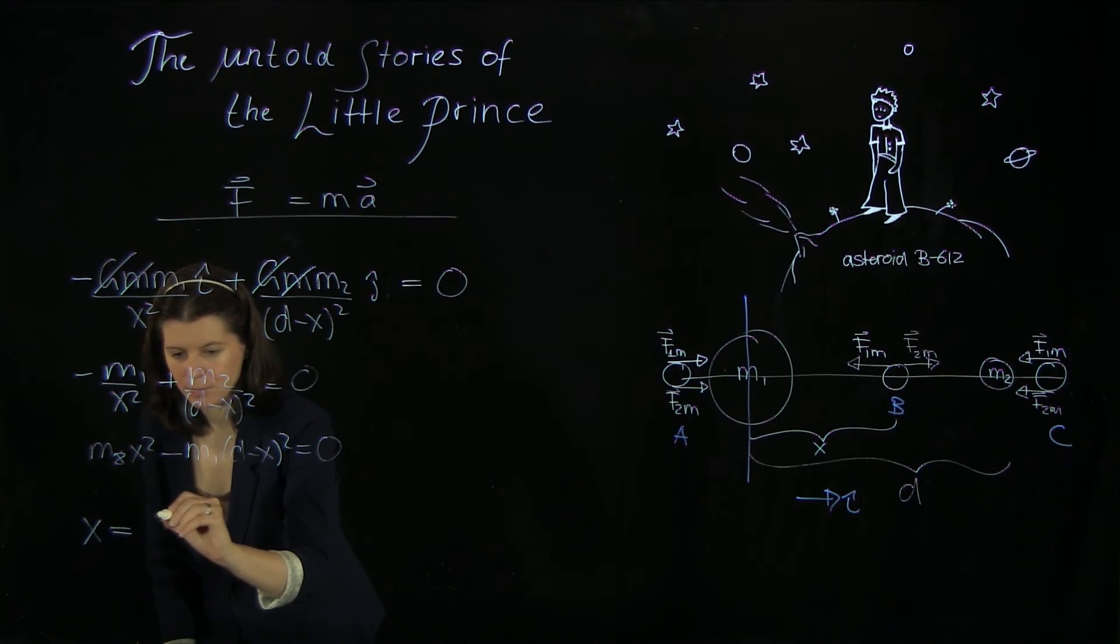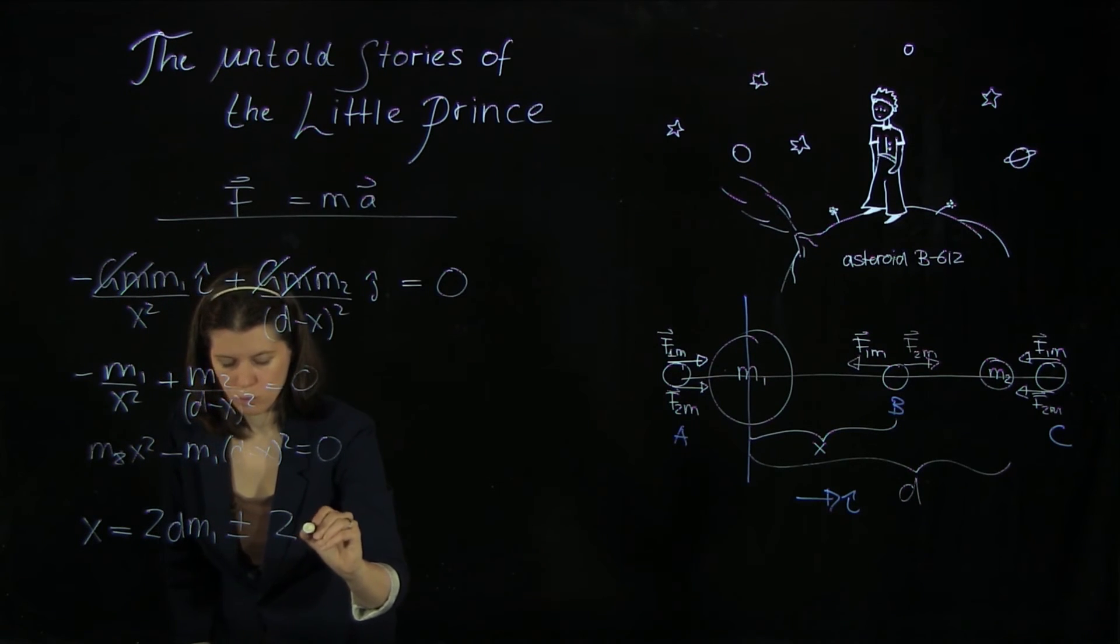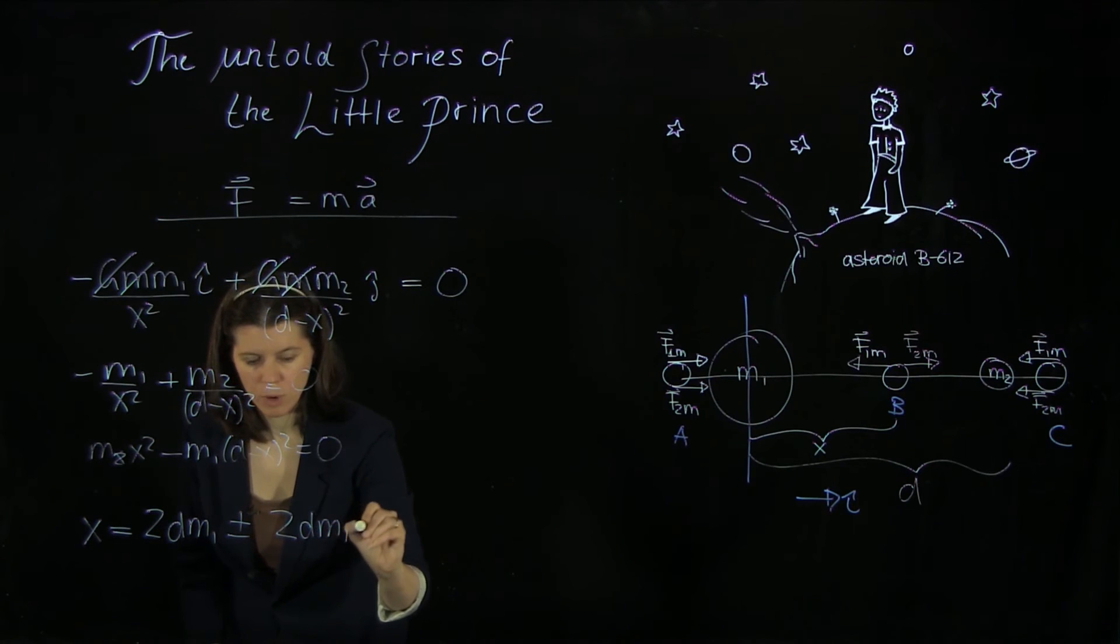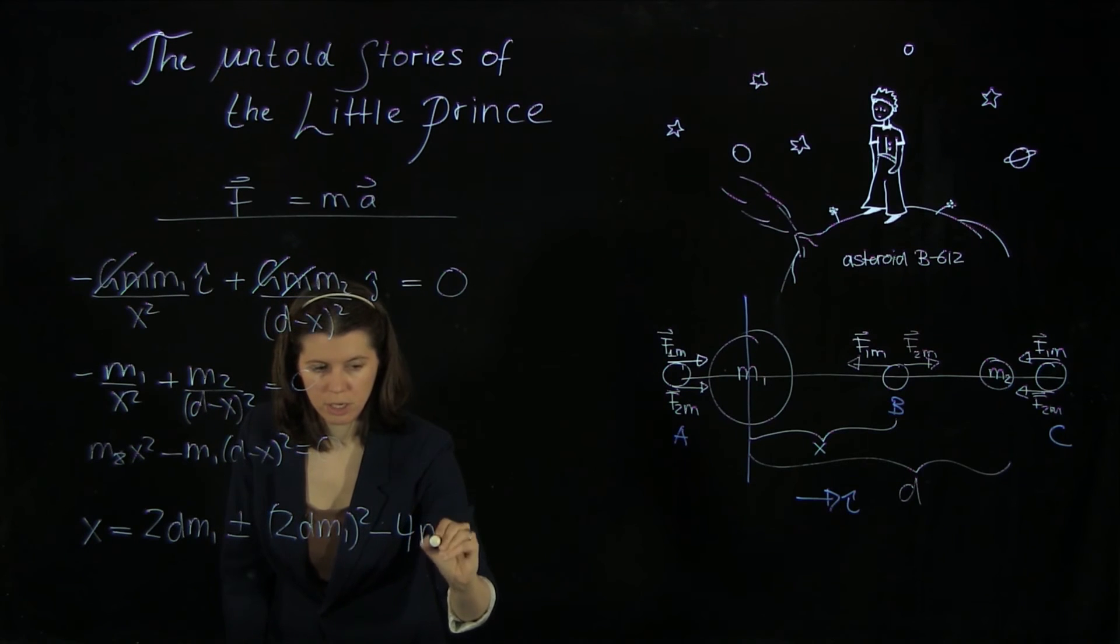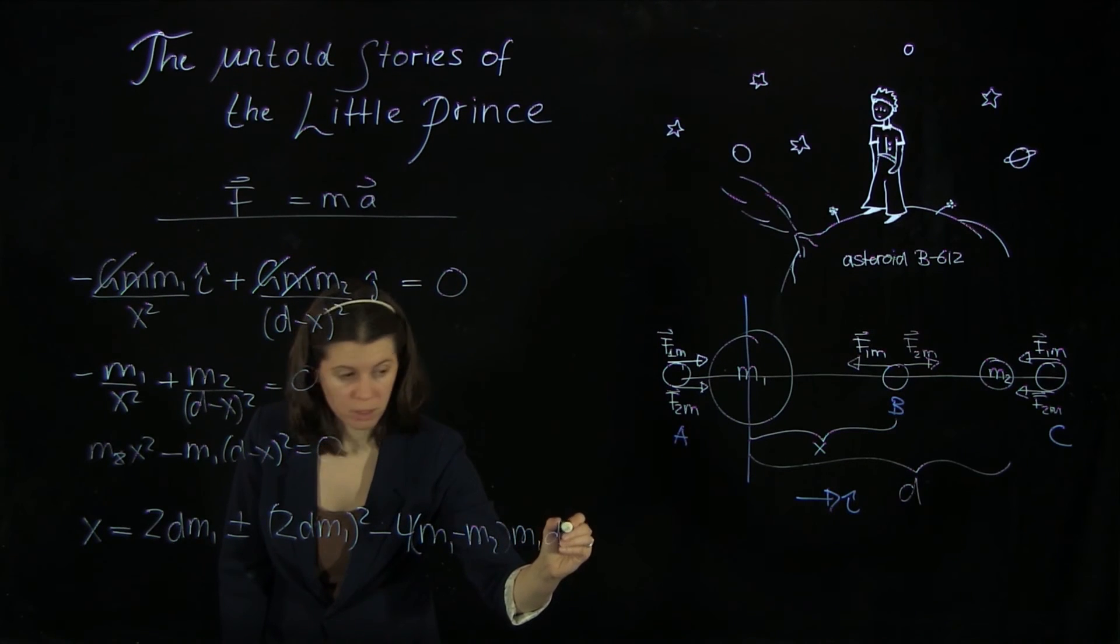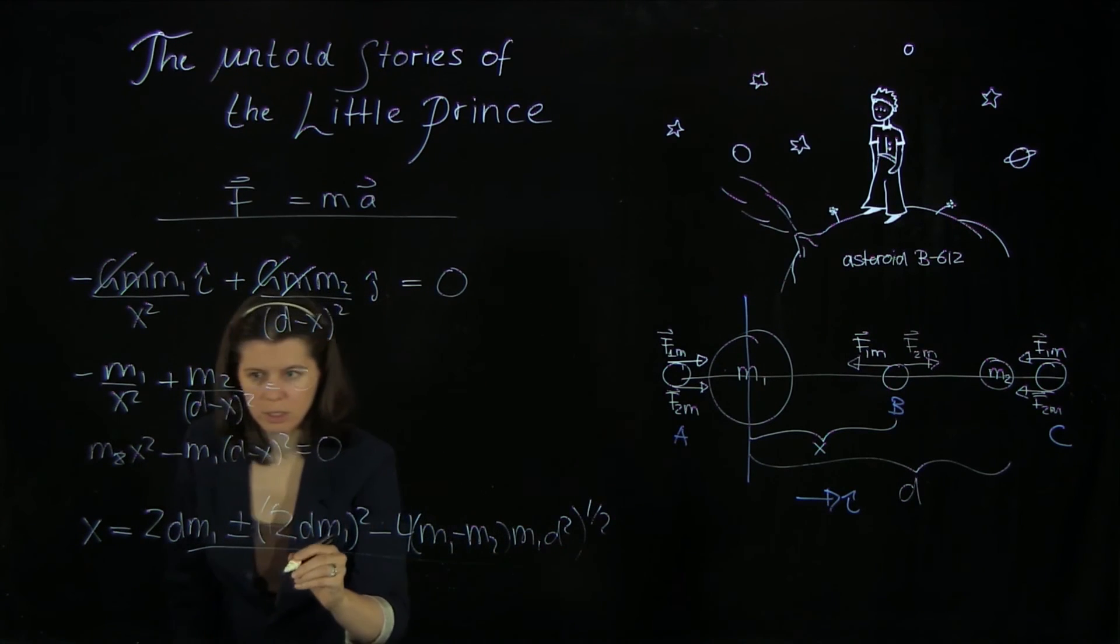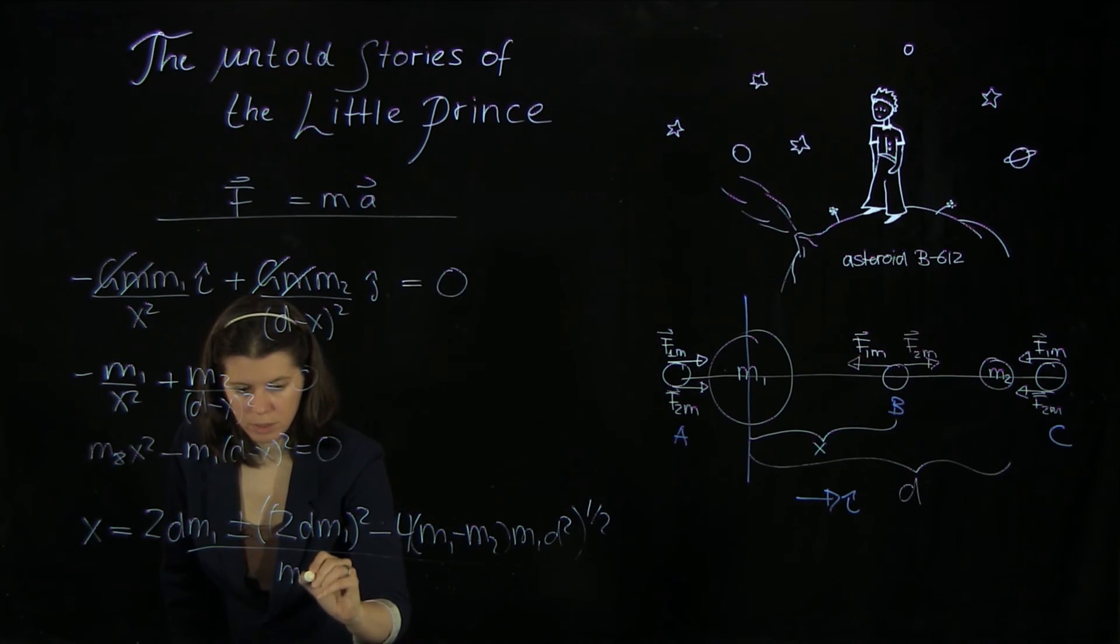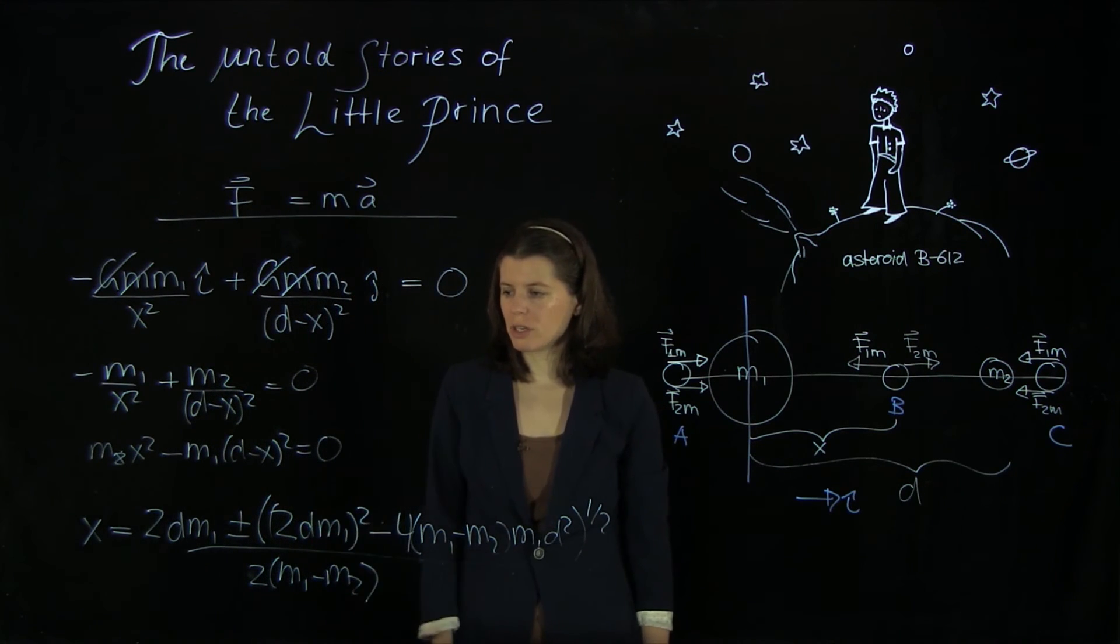x equals 2 d m1 plus minus 2 d m1 squared minus 4 m1 minus m2 m1 d squared. And then the square root of that over 2 m1 minus m2. So we have this quadratic equation here or the solution.